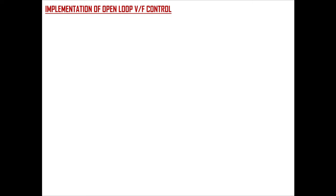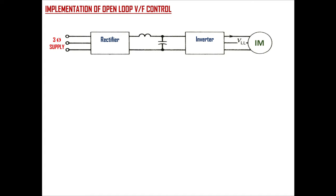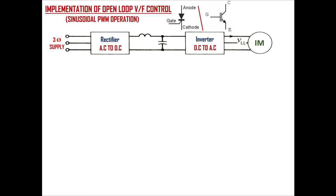Now it's time to see the implementation of V/F control. First let's see the open loop system, then we will see the closed loop system. V/F control is typically implemented using a rectifier and inverter setup. The input three-phase AC supply is converted to DC in the rectifier, then the DC is converted back to AC in the inverter, which feeds the induction motor. The inverter is usually made up of six power semiconductor switches — either thyristors or IGBTs — and our aim is to vary the voltage and frequency output given to the induction motor by controlling the gate terminals of these switches.